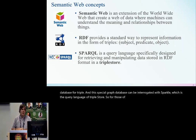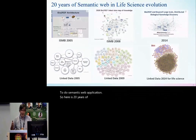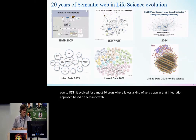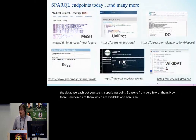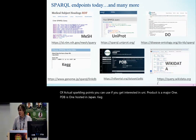For those of you who have used triplestores before, Virtuoso was very popular as a database for Semantic Web applications. Here is 20 years of evolution. 20 years ago I was here trying to find a subject — I created Bio2RDF. It evolved for almost 10 years and was a popular data integration approach based on Semantic Web for life sciences. Each database you see on the slide is a SPARQL endpoint. From very few of them, there are now hundreds globally. Examples of actual SPARQL endpoints include UniProt, PDB hosted in Japan, KEGG, and Wikidata — a conversion of the Wikimedia knowledge base into a graph with SPARQL.